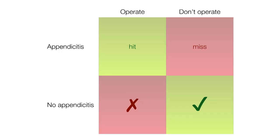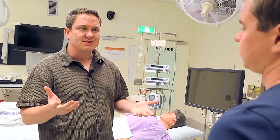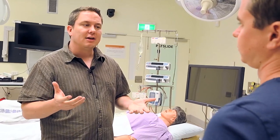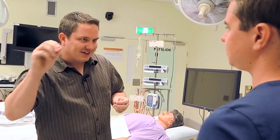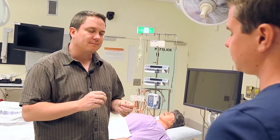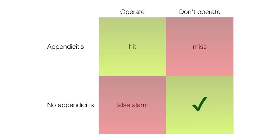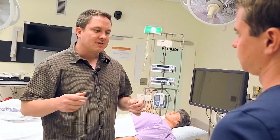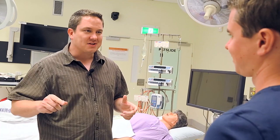If you don't have appendicitis and they decide to operate anyway, that's also a mistake — that's called a false alarm. That's essentially unnecessary surgery. But it's not as severe as a miss. And finally, we have a correct rejection, where they correctly decide not to operate on a healthy appendix. So those are the four possible outcomes.